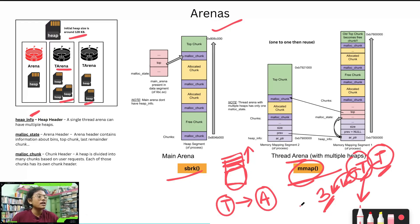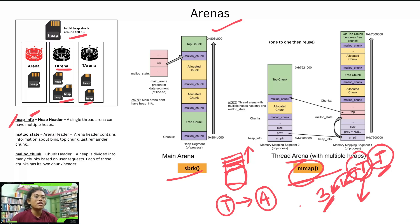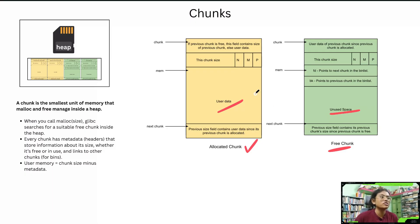Thread arenas can have multiple heaps, enabling memory mapping. The malloc_state structure holds information about the arena headers — the bins, the chunks, and all other related information. The malloc_chunk structure holds information about the individual chunks, based on how many chunks the heap is divided into according to user requests. That covers arenas.